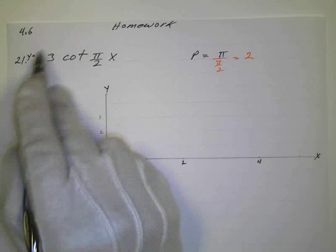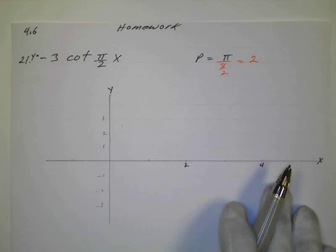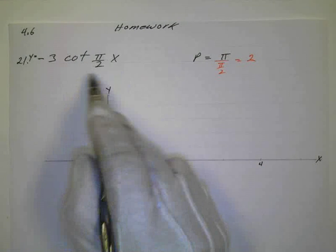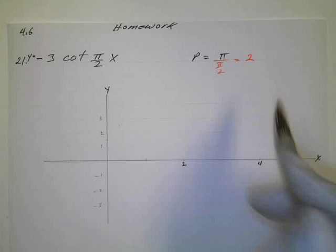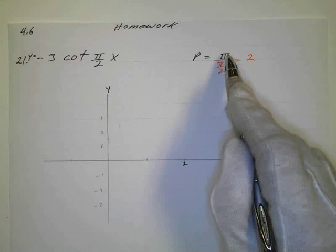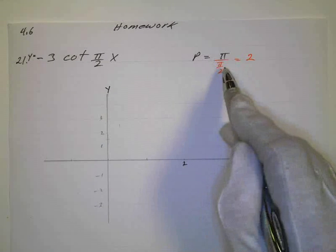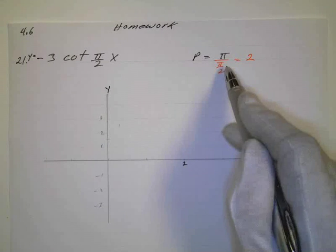So it looks like I've got kind of an amplitude change here as far as what's happening vertically with it, and then it looks like I have something in here going to change the period. We can look at the period, and we think it would be pi over b, which is going to be pi divided by pi over 2, or pi times 2 over pi, which is just 2.